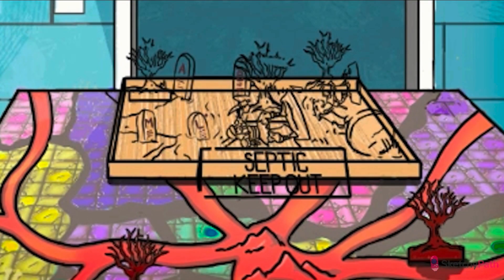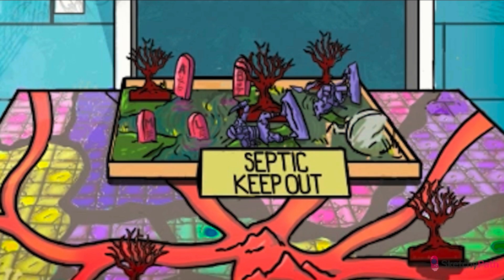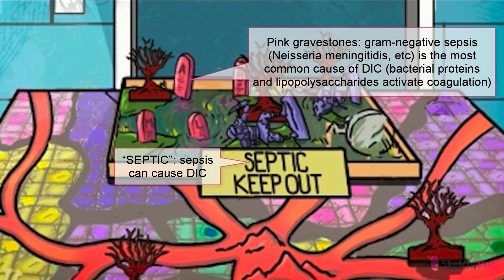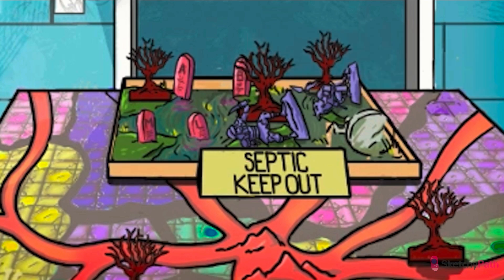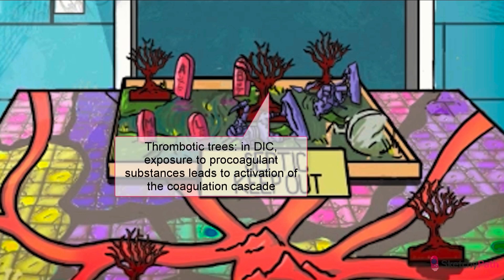The most frequently encountered version of DIC is the acute type. Acute DIC starts with sudden activation of the coagulation cascade after exposure to some kind of pro-coagulant substance. Gram-negative sepsis and infection, especially by Neisseria meningitidis, are the most common causes of DIC, in which bacterial proteins and lipopolysaccharides activate coagulation through a variety of complex mechanisms. This is symbolized by the discard pile for dead game pieces — the septic pile. We even incorporated a gram-negative bacterial design into the border, and inside you'll notice thrombotic tree pieces as well, representing clot formation. A variety of organisms can precipitate DIC, including fungi, viruses, and parasites.